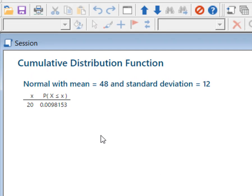Minitab is going to think for a minute. It's going to tell me that with the mean of 48 and a standard deviation of 12, the probability that X is less than 20 is 0.0098.